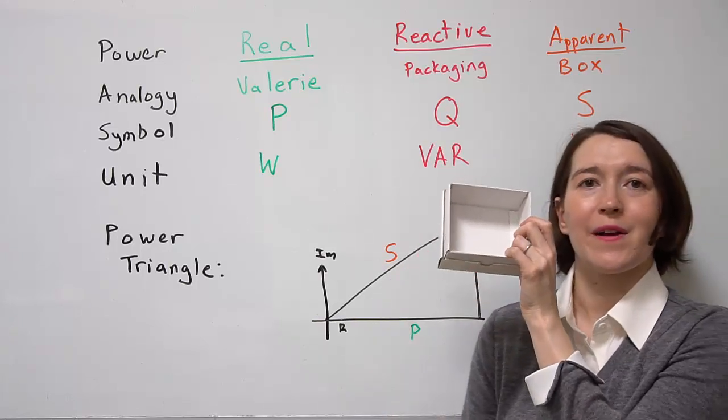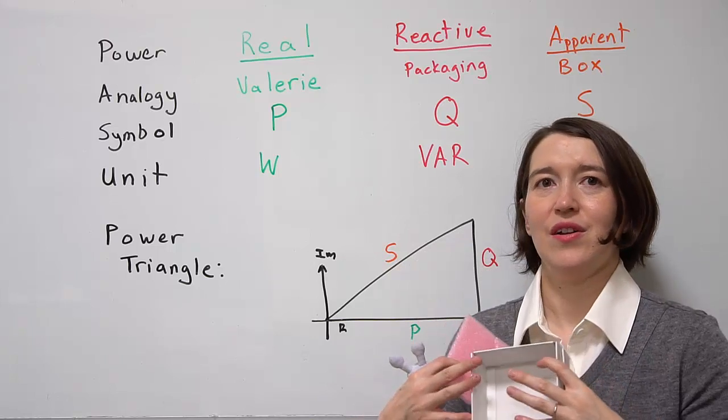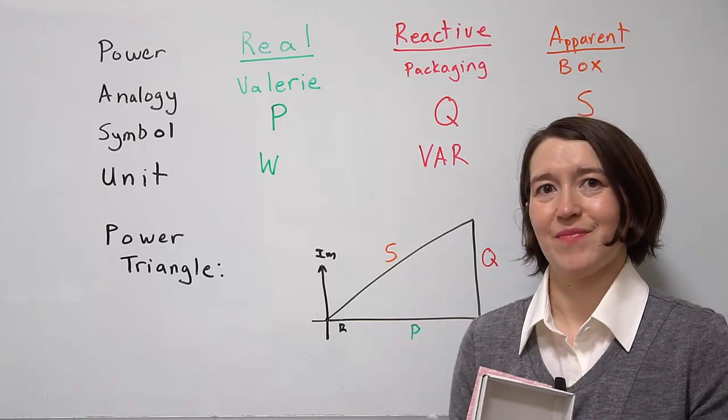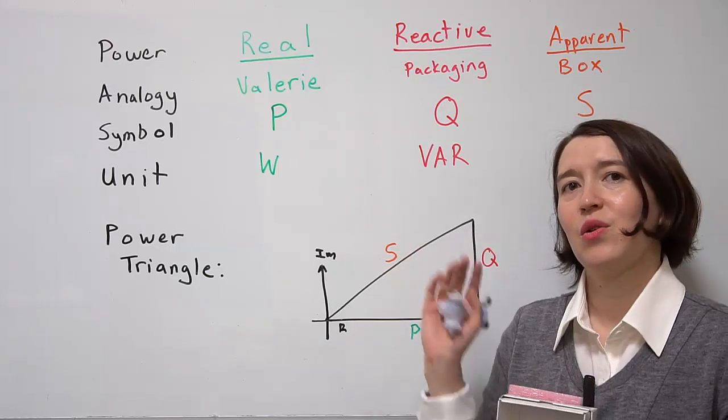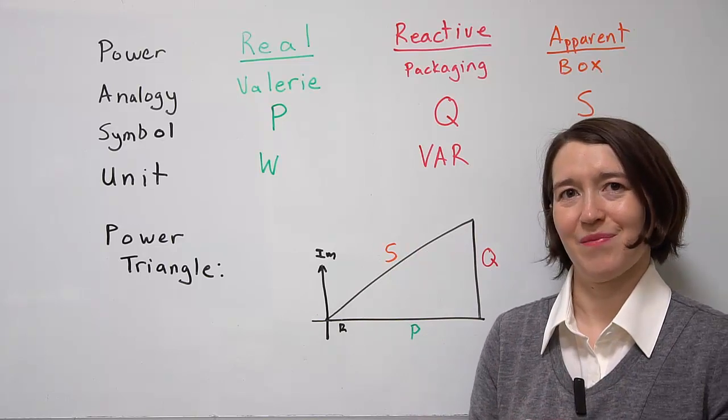The apparent power is the box or container that has a potential power that you could send. I hope that gives you a basic introduction. We'll be talking more about this later on.